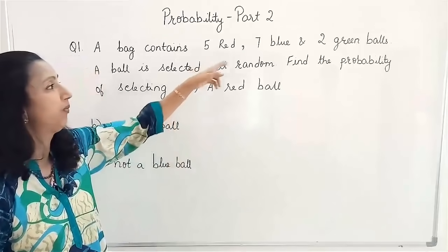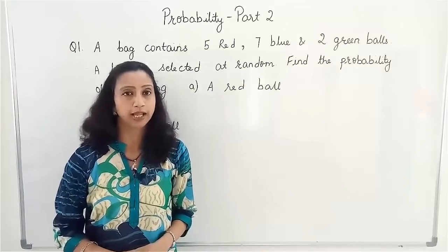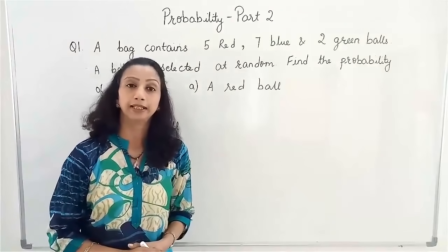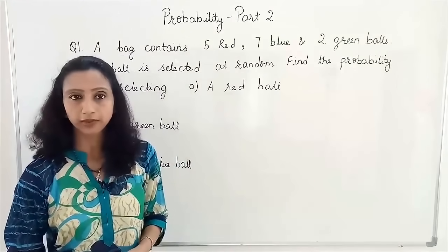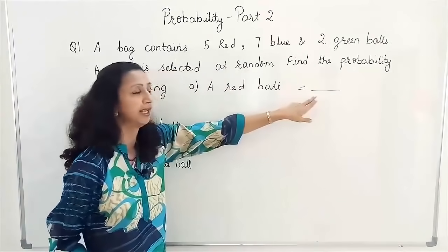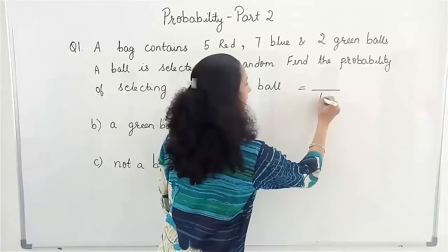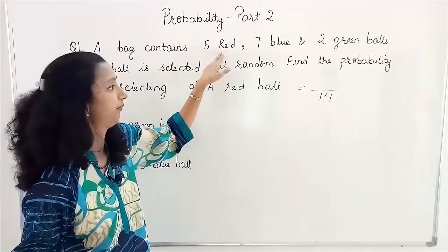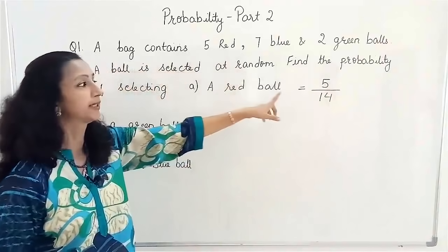First of all we have to see how many total balls there are: 5 plus 7 plus 2, that means there are 14 balls. Out of 14 balls, what is the probability of selecting a red ball? The probability of selecting any ball is equal. We write the total number of balls — that is the total outcomes — in the denominator: 14. And out of that, how many red balls have been given? 5. So the probability of selecting a red ball is 5 by 14.